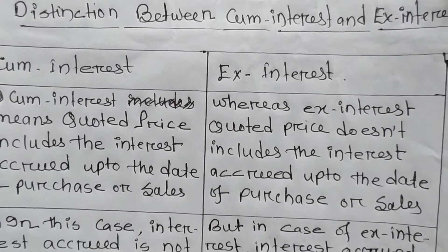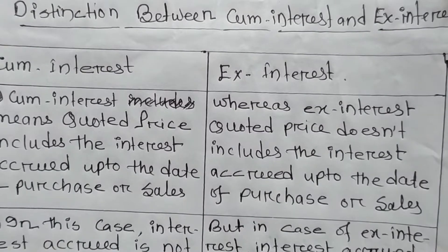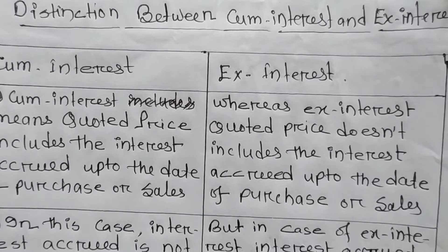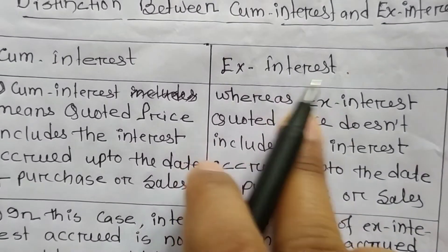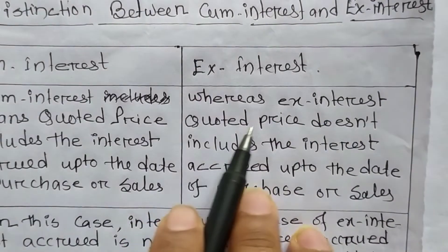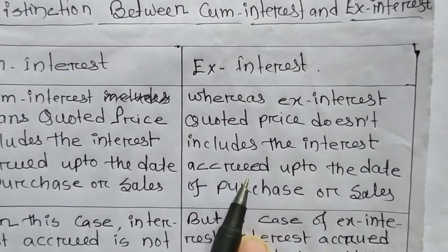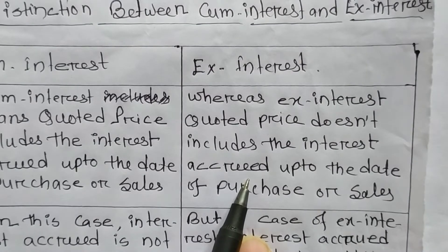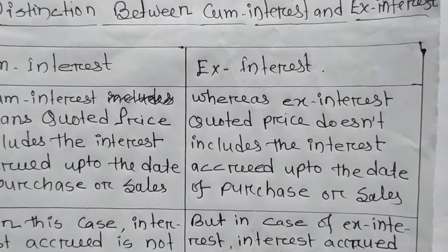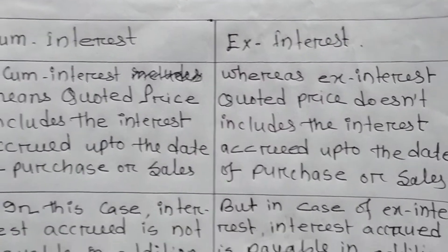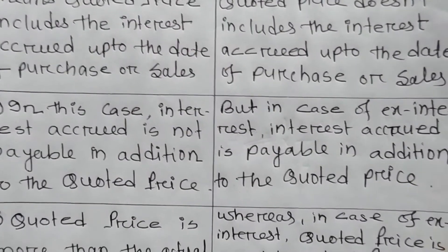Under cum interest, the quoted price includes the actual cost of the investment as well as the interest from the last due date to the date of sale or purchase. Ex interest means the quoted price does not include the interest accrued — it includes only the actual cost of the investment up to the date of sale or purchase.